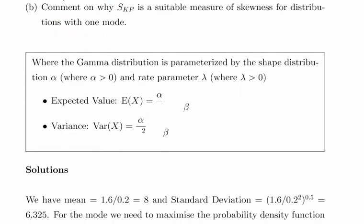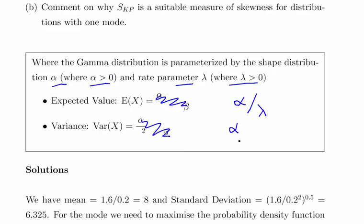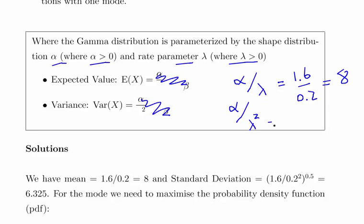To start, the gamma distribution is parameterized with shape parameter alpha where alpha is greater than 0, and rate parameter lambda where lambda is greater than 0. The expected value is alpha over lambda, and the variance is alpha over lambda squared. In this case, the mean is 1.6 over 0.2, which gives us 8, and the variance is 1.6 over 0.04, which equals 40.